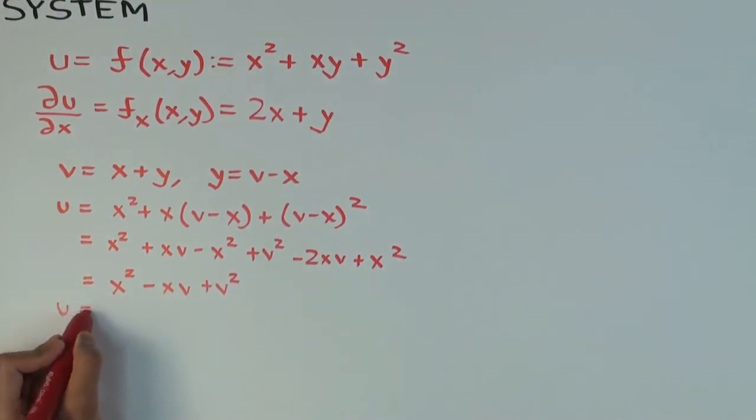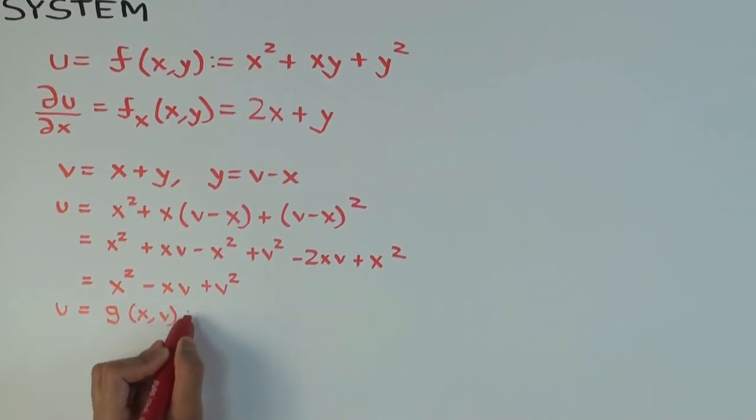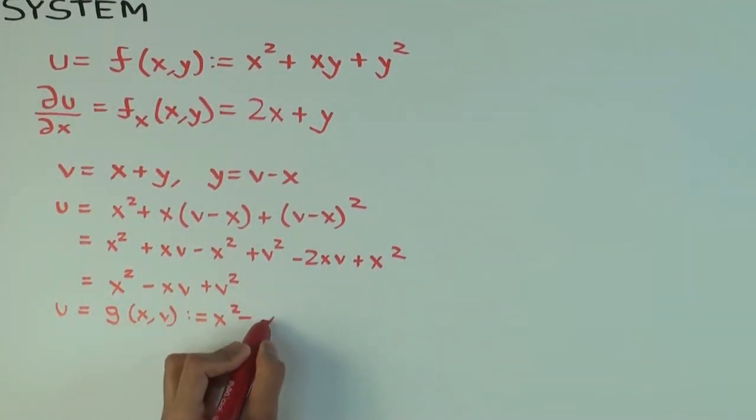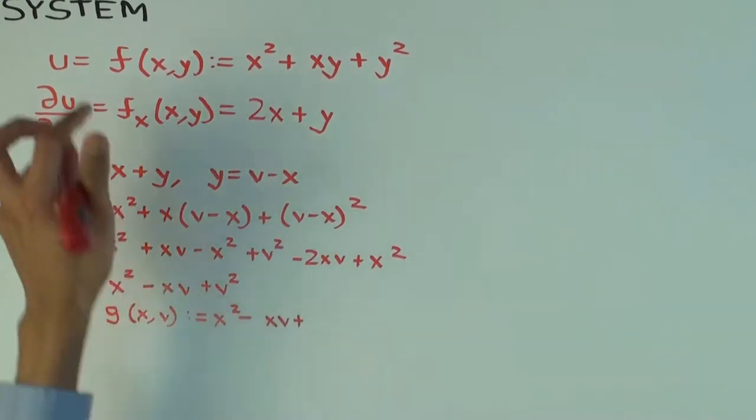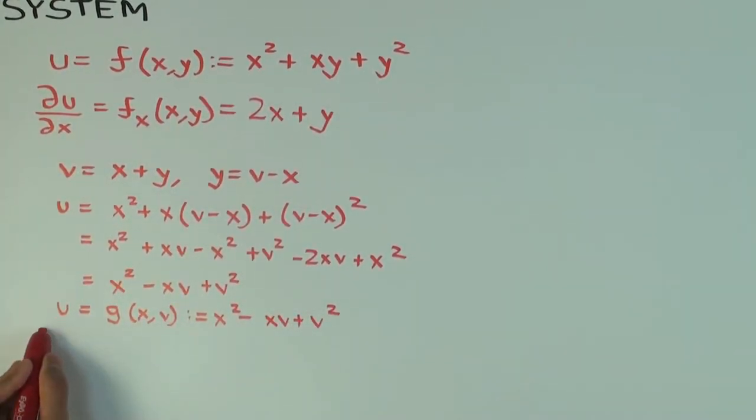So I could call this a new function g of x and v. I cannot use the same letter for the function, but I can use the same letter for the output variable. In fact, I should use the same letter for the output variable. So the function letter changed from f to g.